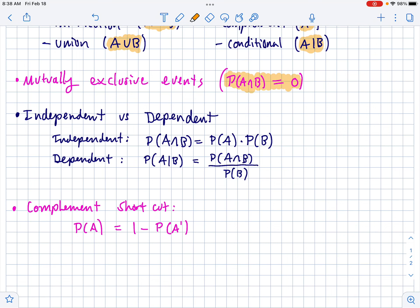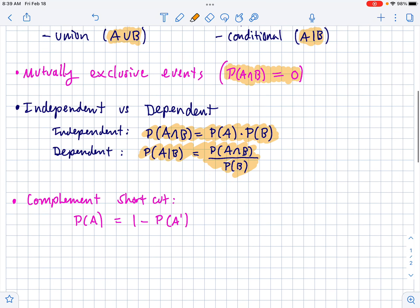We also talked briefly about independent versus dependent probability. Remember, if two events are independent, then their intersection is just their separate probabilities multiplied. And if two events are dependent, you can always use this handy dandy formula right here.